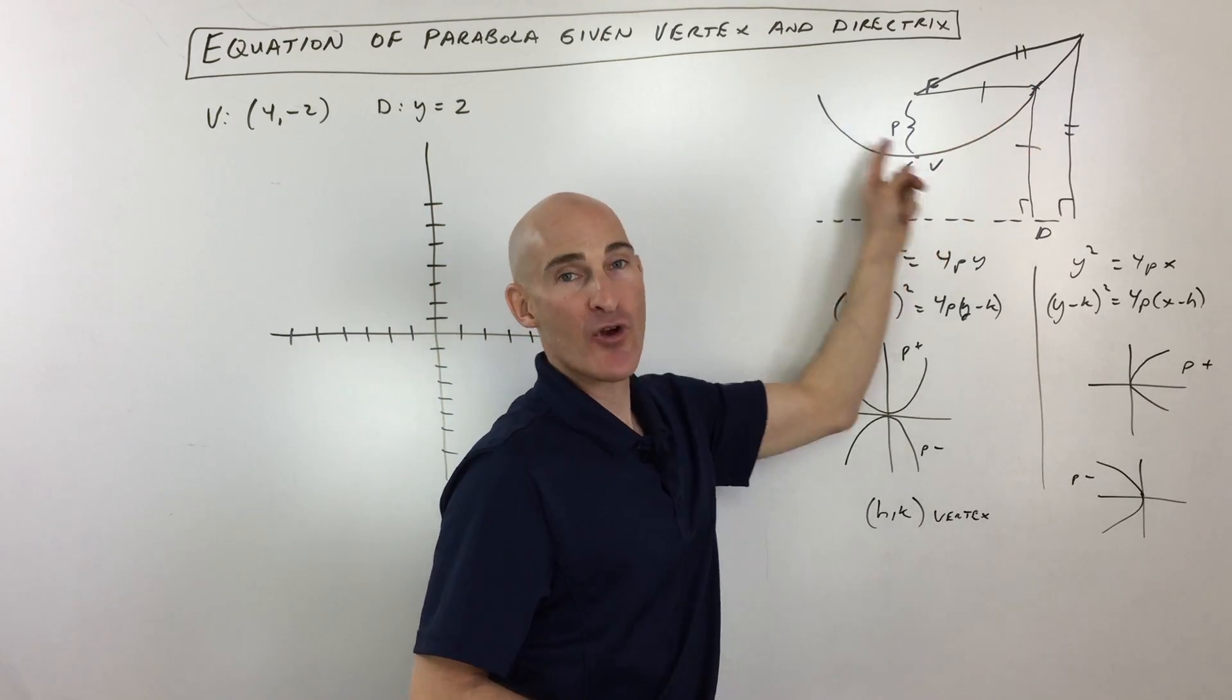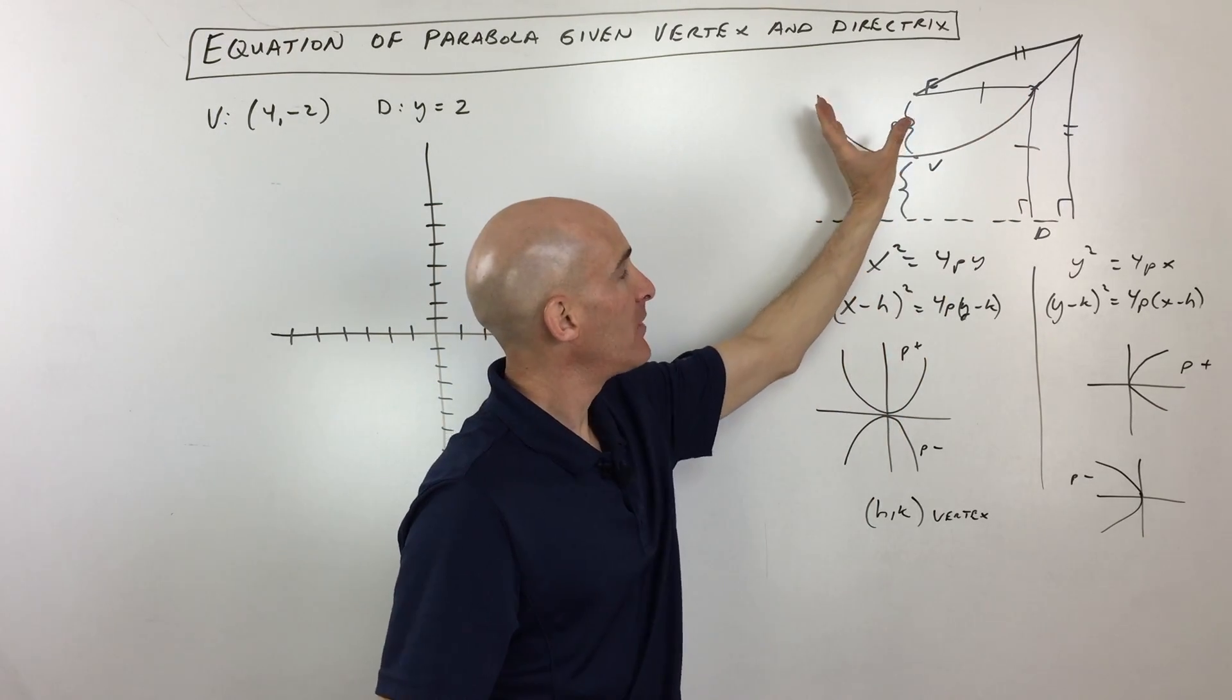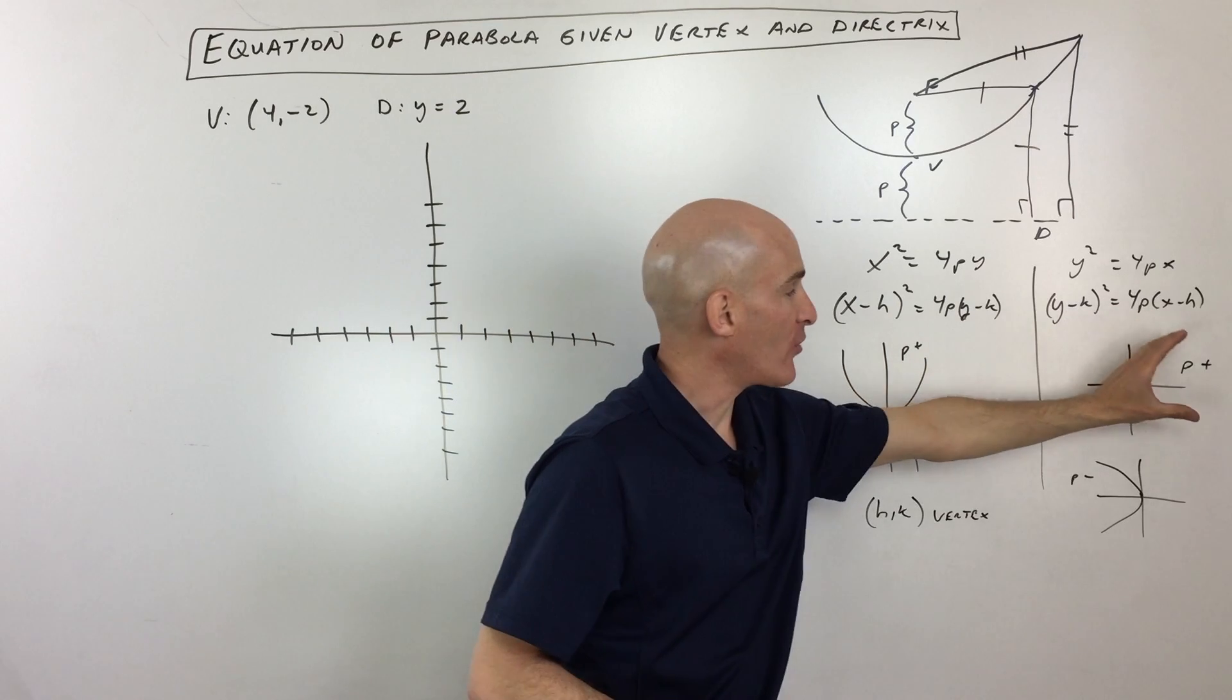A parabola basically is this U-shaped graph. It can be opening up or down or right or left.